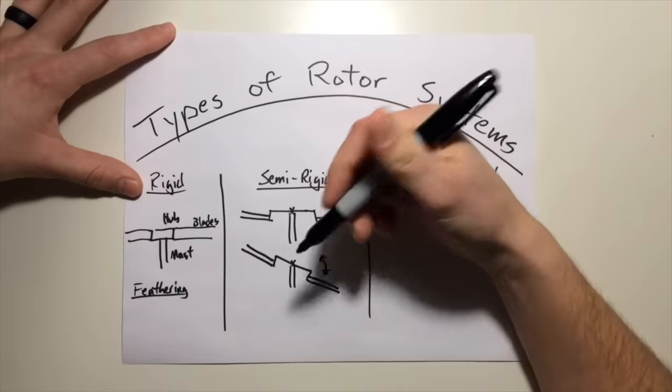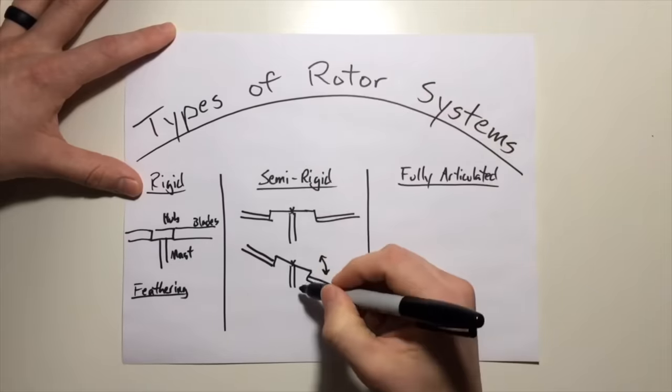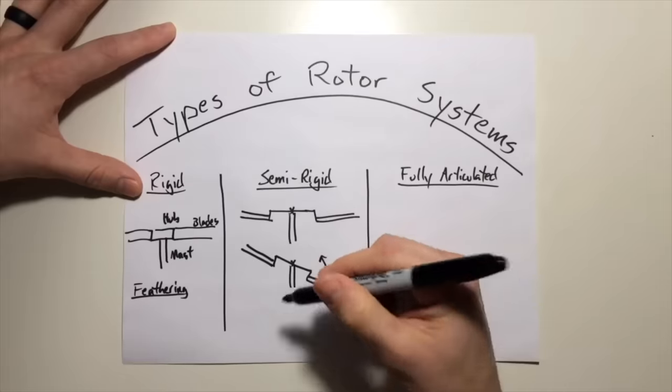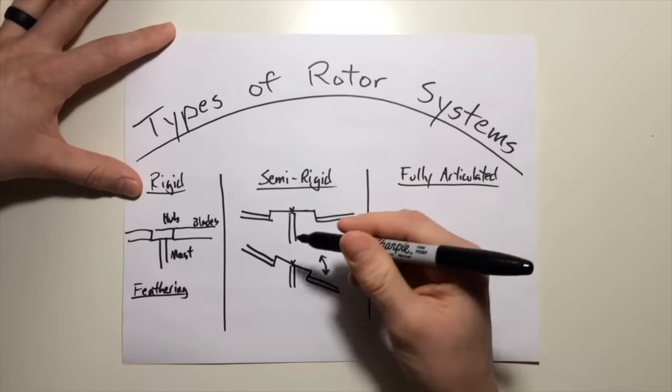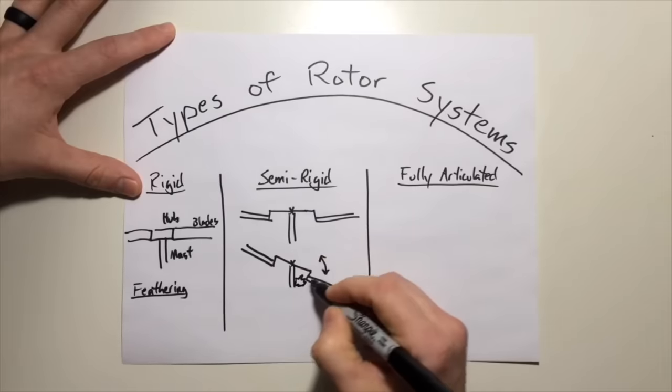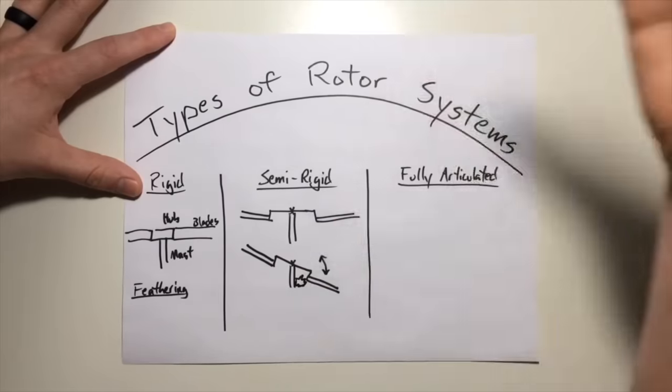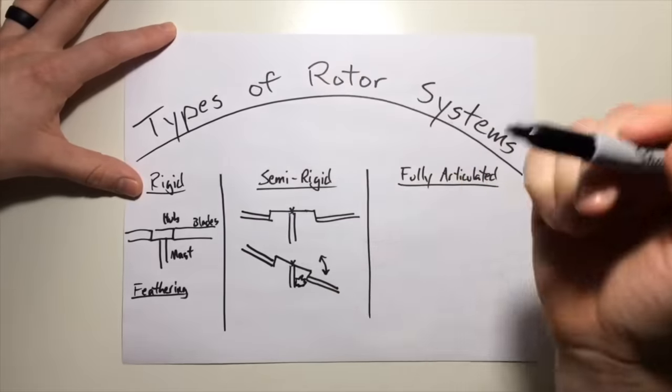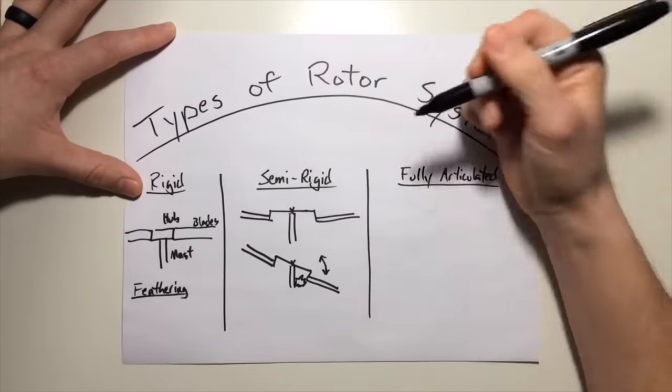However, this system is subject to mast bumping, which is where the mast and the rotor system can potentially make contact, usually during something like slope landings or low G flight and potentially could have rotor separation if this impact was enough to sever the mast, make the entire rotor system fly off. So that is one limitation of a semi-rigid rotor system.